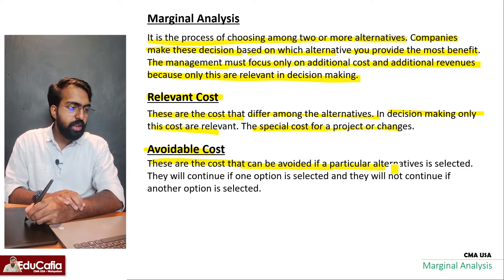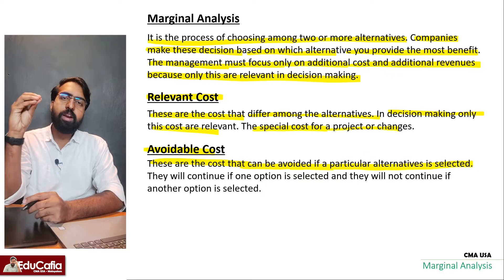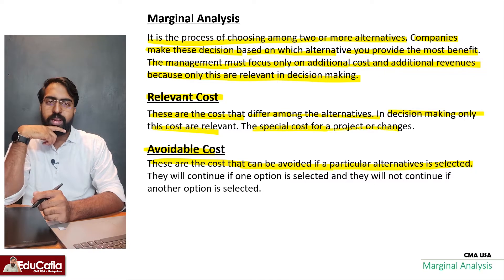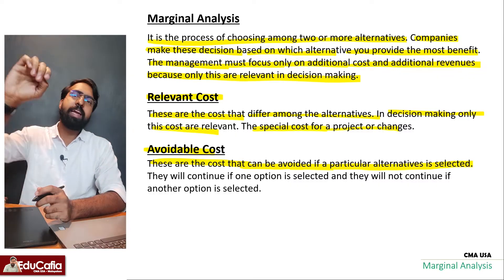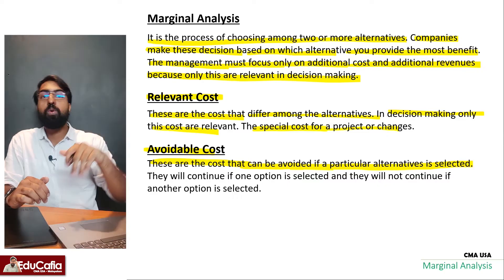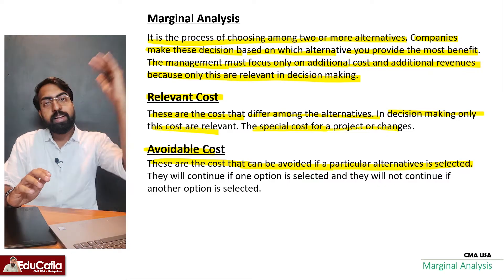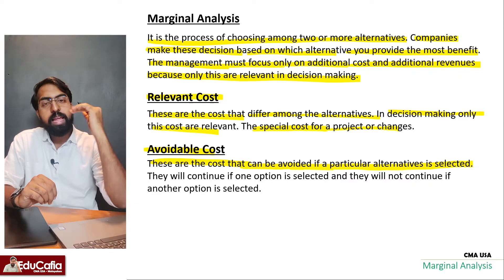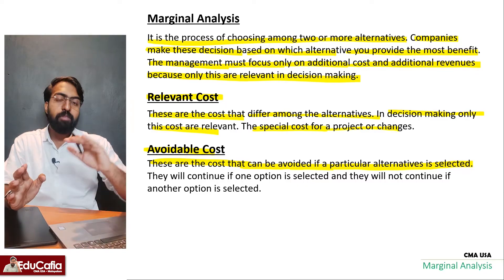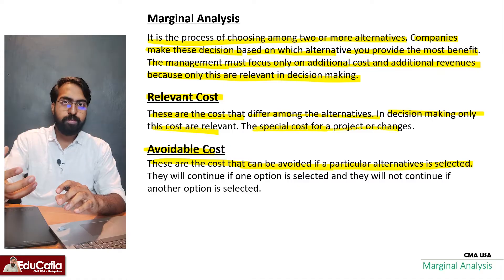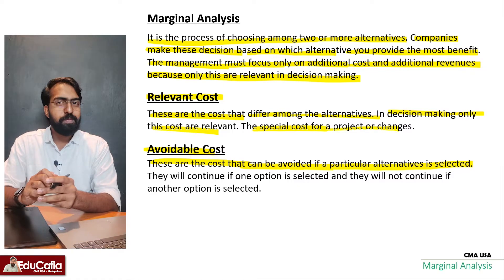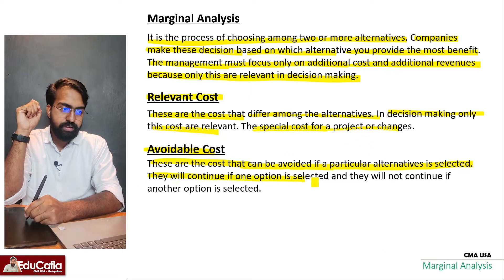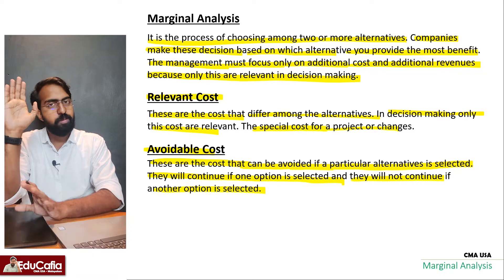For example, if one location requires transportation costs and another does not, those transportation costs are avoidable. We are going to avoid that extra transportation cost. These costs will continue if one option is selected, but will not continue if another option is selected.